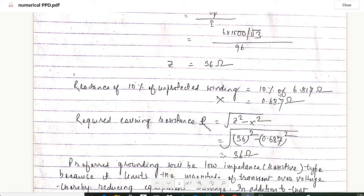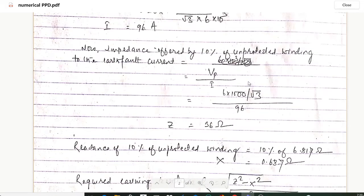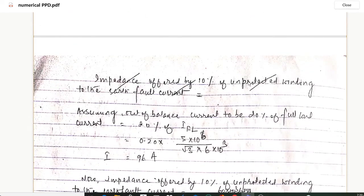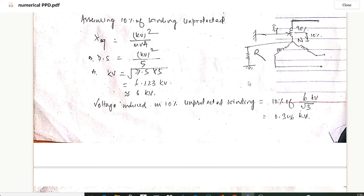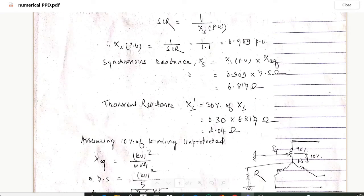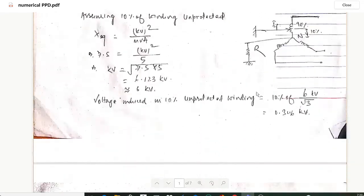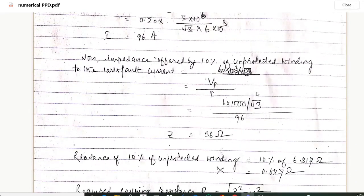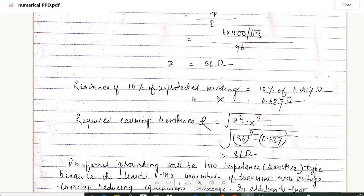Now reactance of 10 percentage of unprotected winding: it will be 10 percentage of 6.817 ohms. This value, synchronous reactance Xs, means 6.817 ohms. So reactance of 10 percentage of unprotected winding will be 10 percentage of 6.817, so we will get the value of X as 0.687.